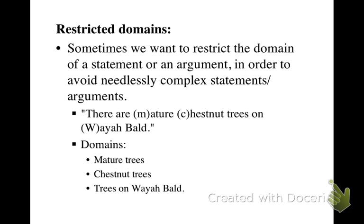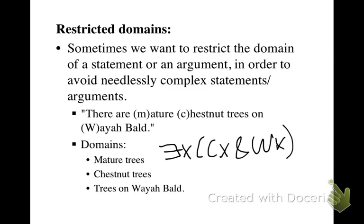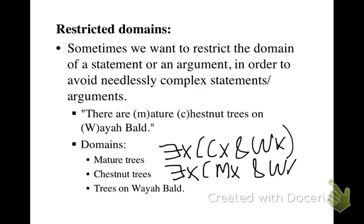So we can ignore that part and just say: there exists an x such that x is a chestnut tree and x is on Weyabald. Likewise, if we have chestnut trees as the domain, we can leave that out of the translation. So we would just say: there exists an x such that x is a mature tree and x is on Weyabald.